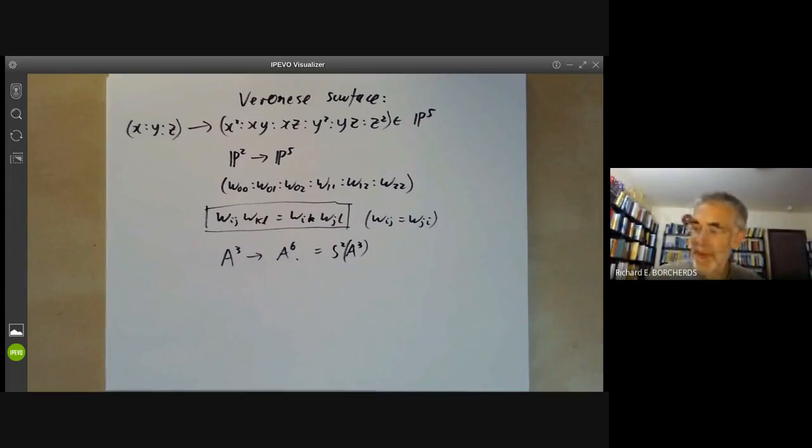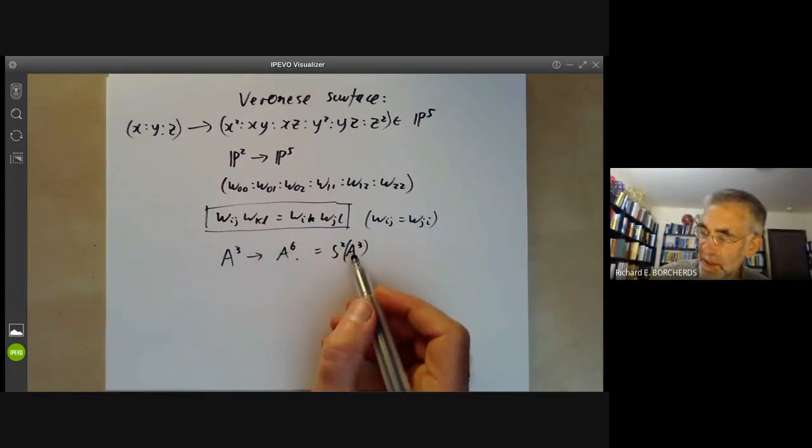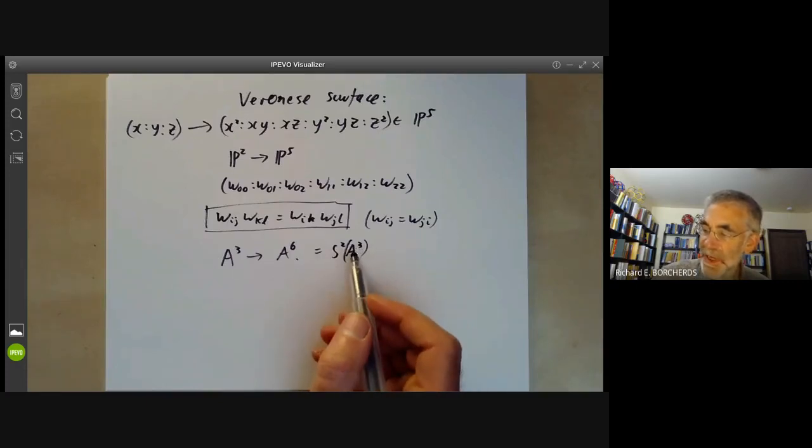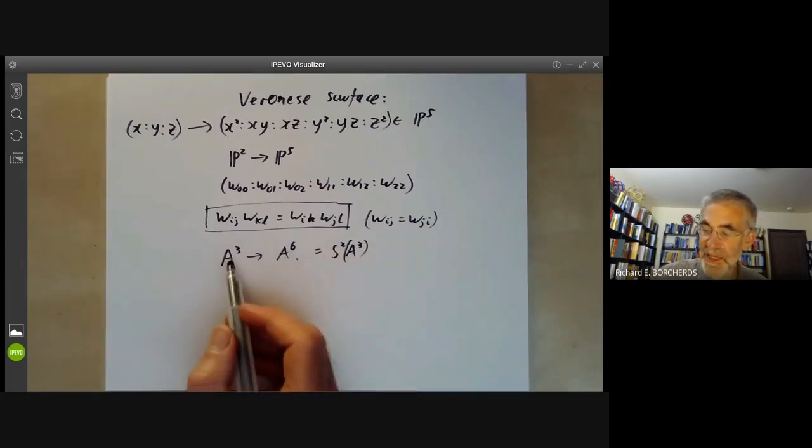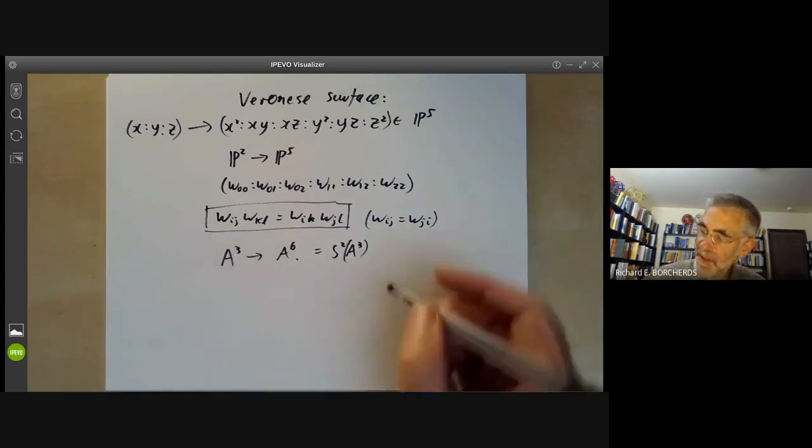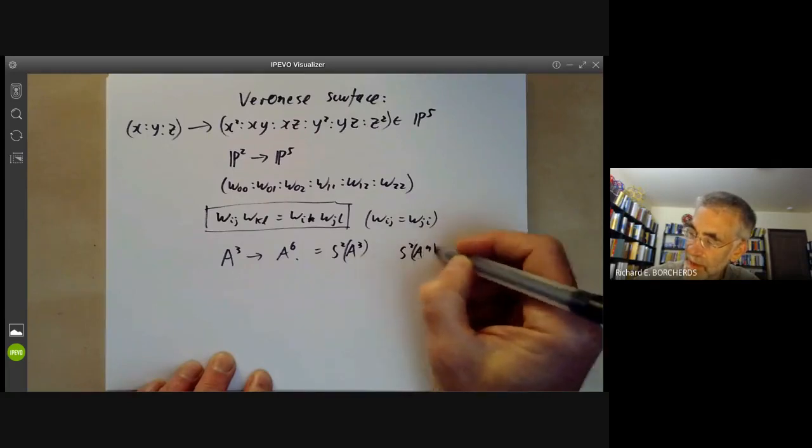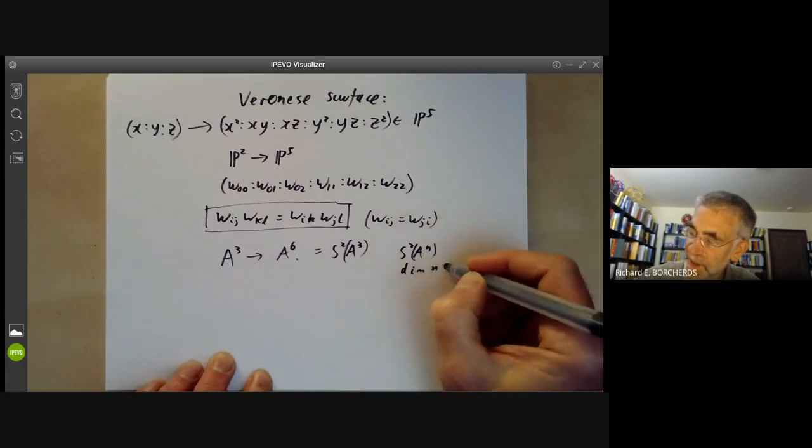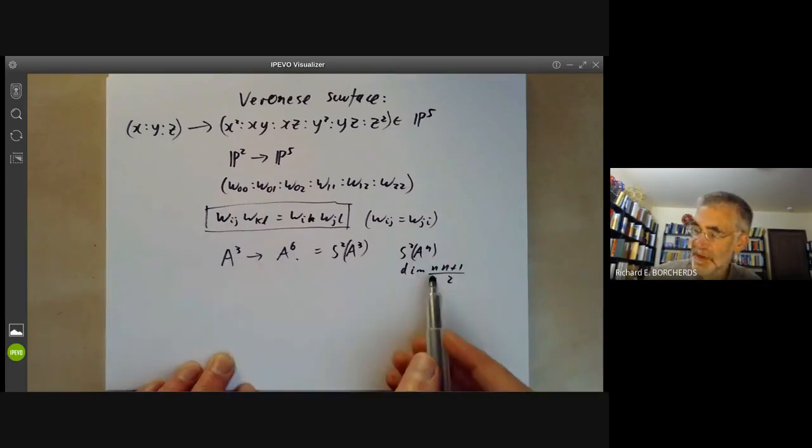Symmetric square is just a way of saying we consider all degree 2 monomials in x, y and z, where x, y and z are a basis of A3. So s squared of An is dimension n times (n+1) over 2, which for n equals 3 gives us 3 by 4 over 2, which is 6.